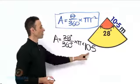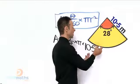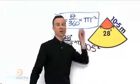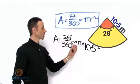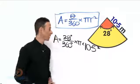Now what we need to do with the 10.5 is to square it. So let's square it. So 28 over 360, 28 of the whole thing which is 360 times pi times 10.5 all squared. Take note of that squared.